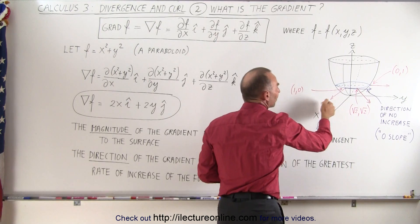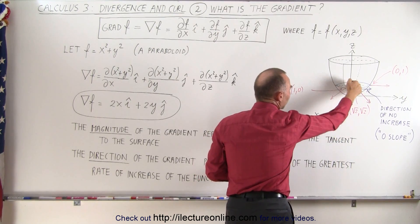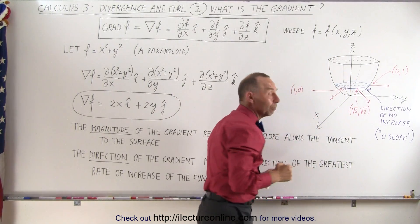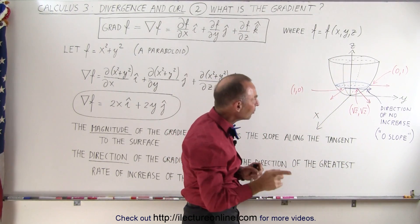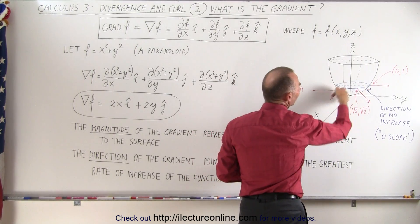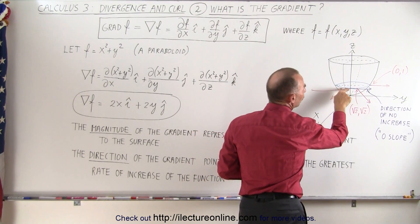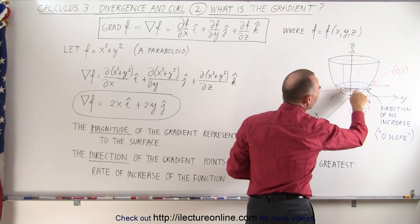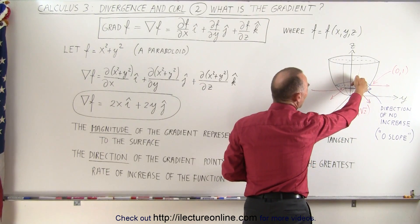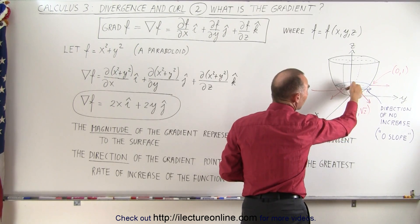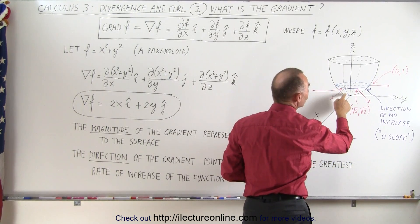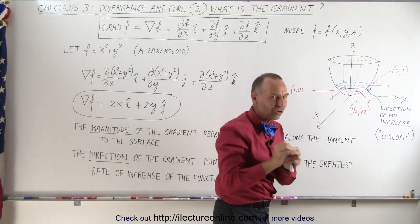If you walk in the direction of increasing x, that's the direction of the greatest increase in the slope. As a counter to that, if we move 90 degrees from this direction along the circular path, the slope doesn't change at all — it's the same anywhere along that circular path. So walking in that perpendicular direction gives a slope change of zero, while walking in the gradient direction gives the maximum slope change.